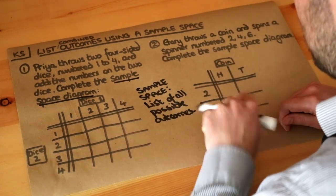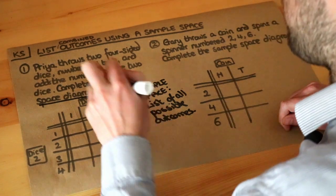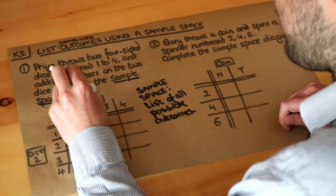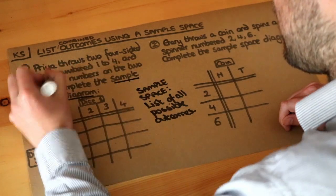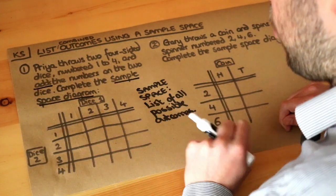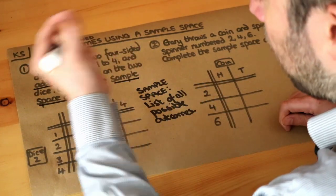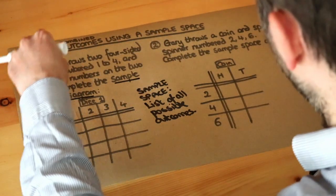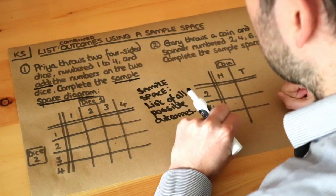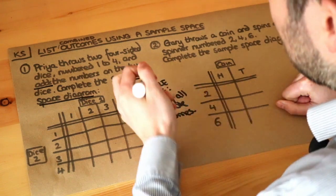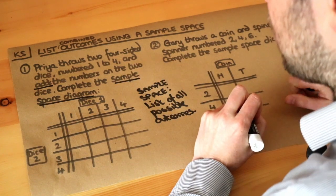Now in these two particular questions, we've actually got two combined outcomes. We're throwing two dice and adding the numbers on those two dice. So we want the combined outcomes. We're taking those two outcomes and combining them somehow, looking at all the possible combined outcomes, and that's what the sample space diagram allows us to do.